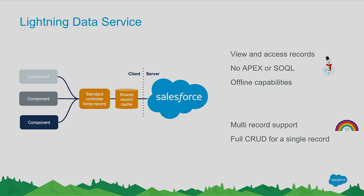My favorite upcoming feature, in dev preview for Winter 17 and GA in Spring 17, is Lightning Data Service. Visualforce has the concept of a standard controller — you set it to an Account and your page becomes metadata-aware without writing Apex queries. We want to bring that same capability to Lightning components. You say force:recordData and give it a record ID, which is any custom or standard SObject. By doing that, you make your Lightning component metadata-aware with no Apex code and no SOQL queries needed. This also reduces the need to write Apex tests in some circumstances.